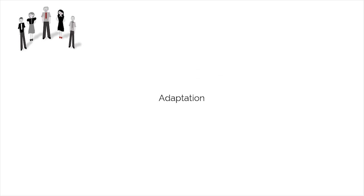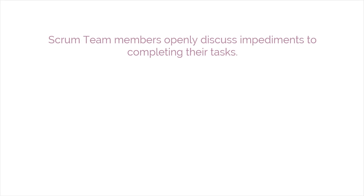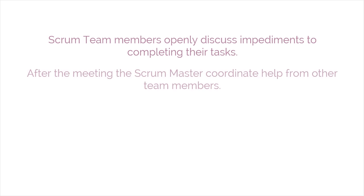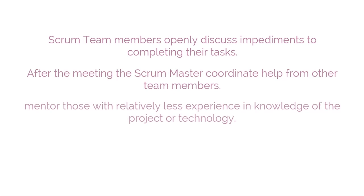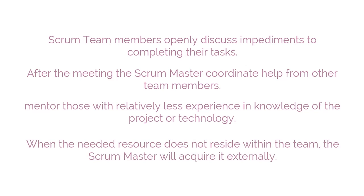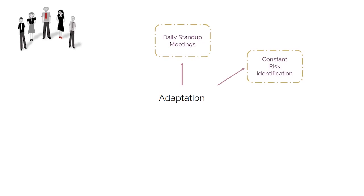Some examples of adaptation include the following. In daily stand-up meetings, Scrum team members openly discuss impediments to completing their tasks. After the meeting, the Scrum Master coordinates help from other team members. More experienced members also mentor those with relatively less experience and knowledge of the project or technology. When the needed resource doesn't reside within the team, the Scrum Master will acquire it externally.